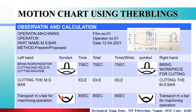अभी क्या करना है? आपको Transport Loaded करना है। Machining Operation मतलब मैंने Cutting Machine पर इसको Cut किया, और बाद में left पर लेके जाओंगा — मतलब आप दोनों Hand से bar को उठा रहे हो और left पर लेके जा रहे हो. That's why Symbol is Transport Loaded. इसके लिए Left Hand को 8 seconds, Right Hand को 8 seconds. Total Operation Time is 8 seconds.